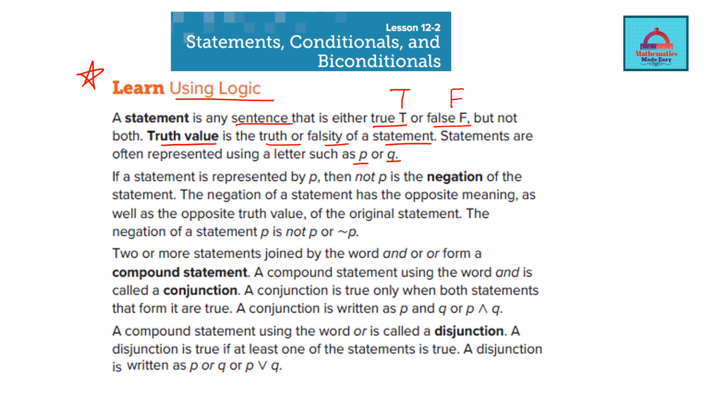Okay and if a statement is represented by p then not p is the negation. Negation is like opposite of the statement. The negation of a statement has opposite meaning as well as the opposite truth value of the original statement. So if the p statement for example is true then not p is going to be false. Just remember that. So the negation of a statement p is not p and it is denoted by a symbol. So not p can be written as this symbol followed by p.